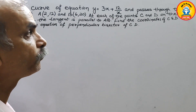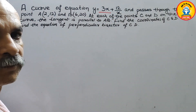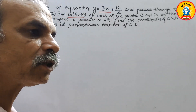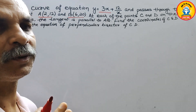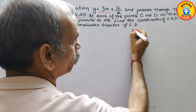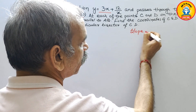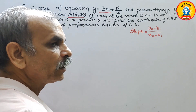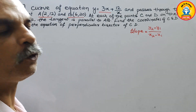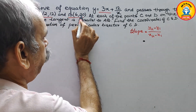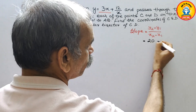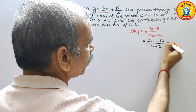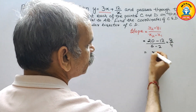Now understand this. They have given the equation and two points. From AB we will find out the slope — that is your tangent slope. Slope is equal to (y2 - y1) / (x2 - x1). Substituting the values: (20 - 12) / (6 - 2) = 8/4 = 2.